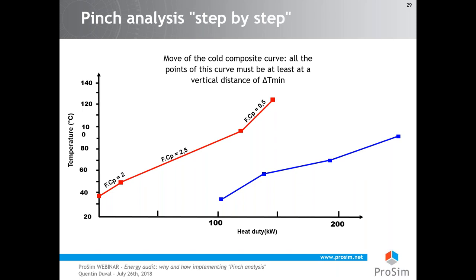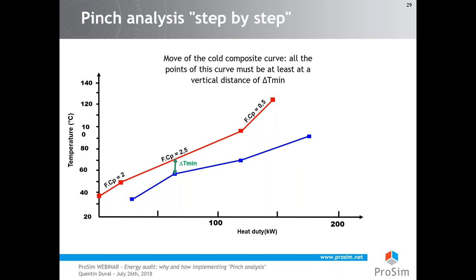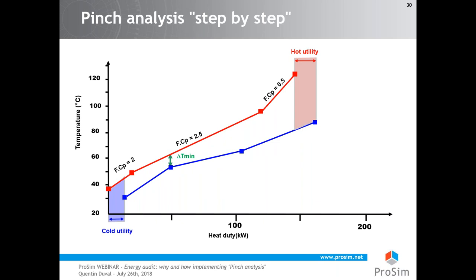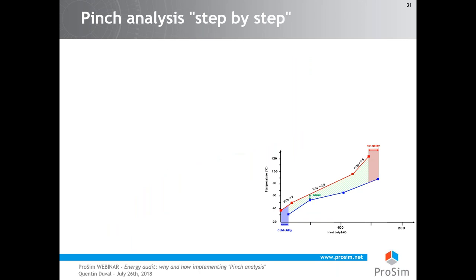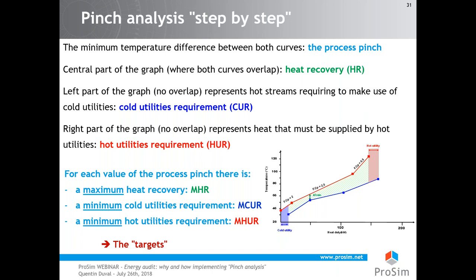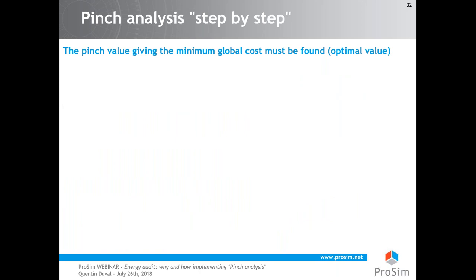As done previously with two streams, we move the cold composite curve below the hot composite curve. When the vertical distance — the pinch — between the curves reaches the target value, we stop moving. With this graphical method we can directly read the minimum quantity of cold and hot utility requirements and, more importantly, the potential heat recovery within the process — the green area. We sum up the results: the method gives the minimum cold utility requirement, the minimum hot utility requirement, and the maximum heat recovery. The next question is how to choose the value of the pinch.